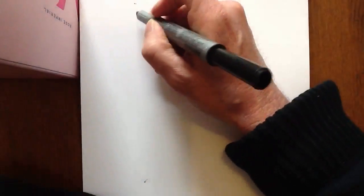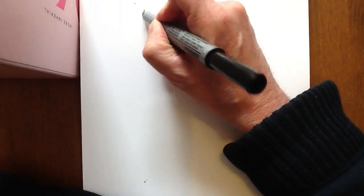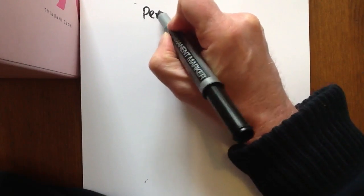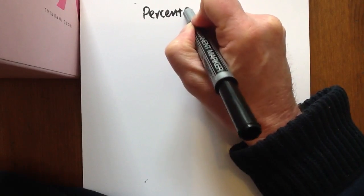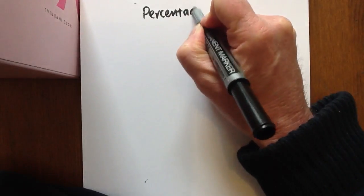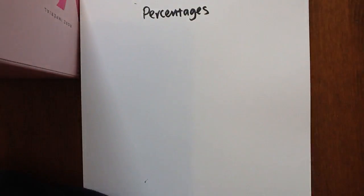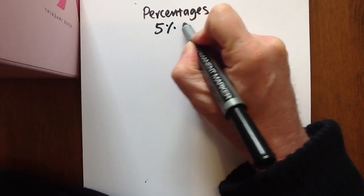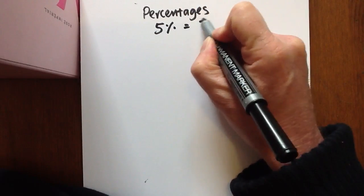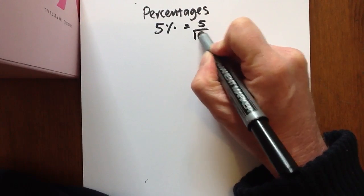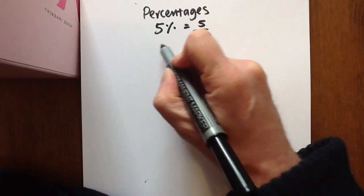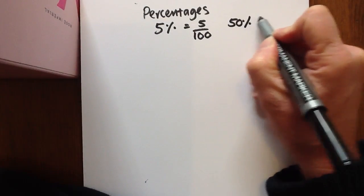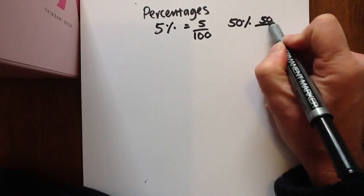So in this short video, we're going to look at some percentages. A percentage is a fraction taken out of 100. So 5% is 5 out of 100, and 50% would be 50 out of 100.